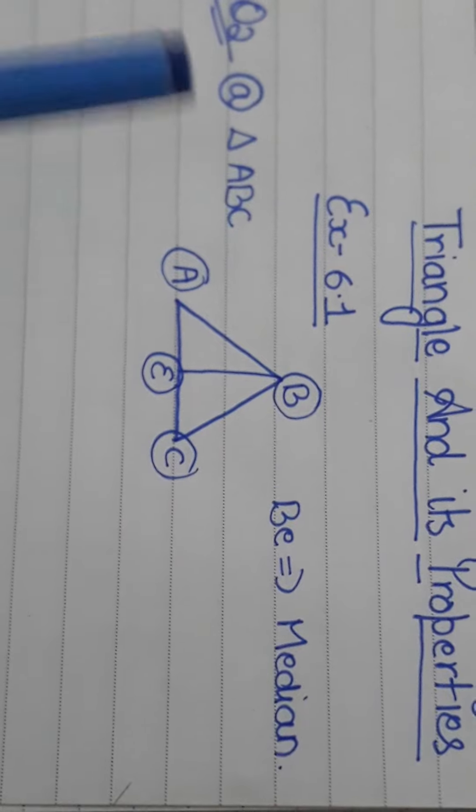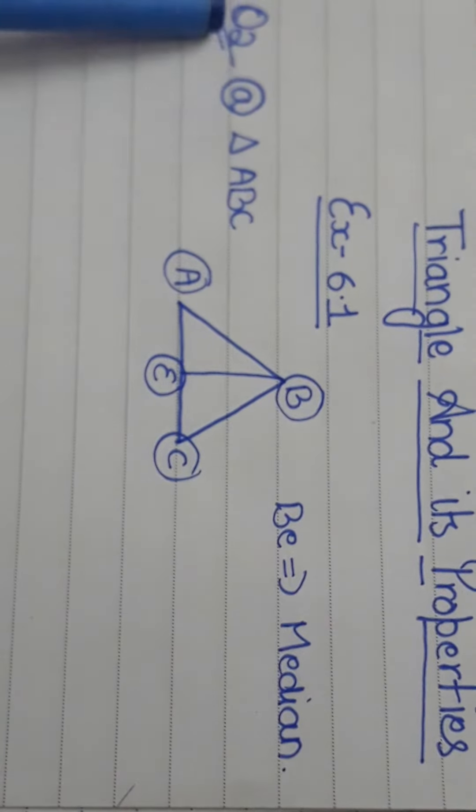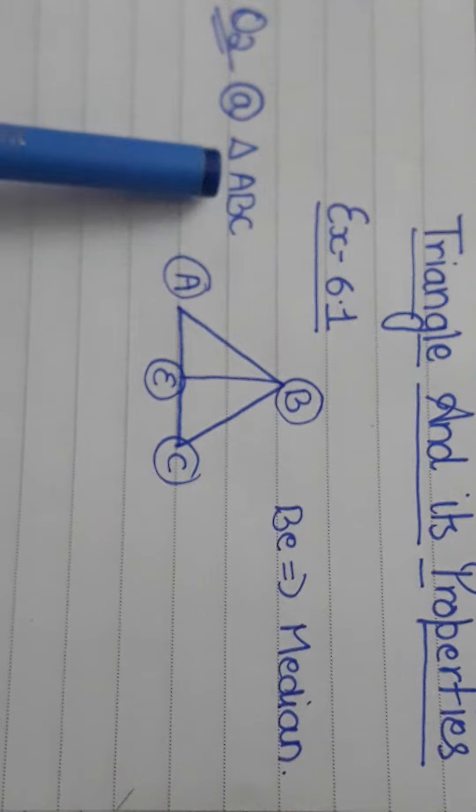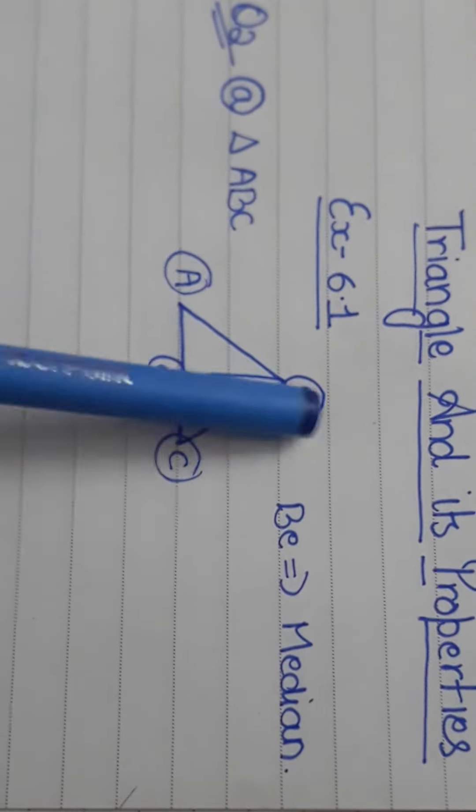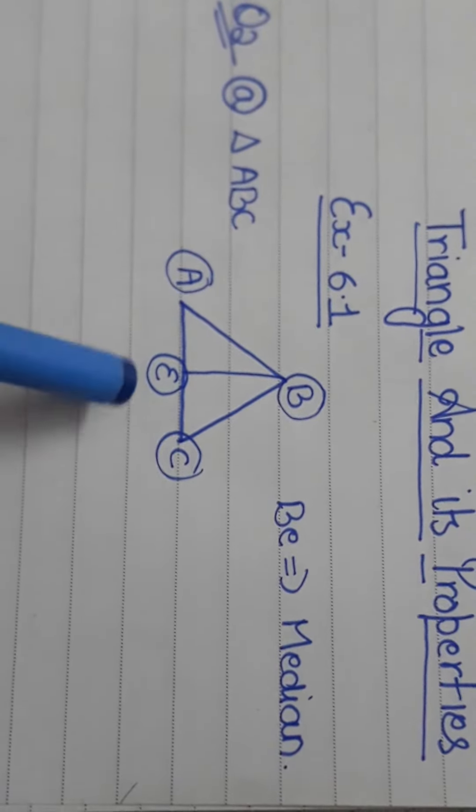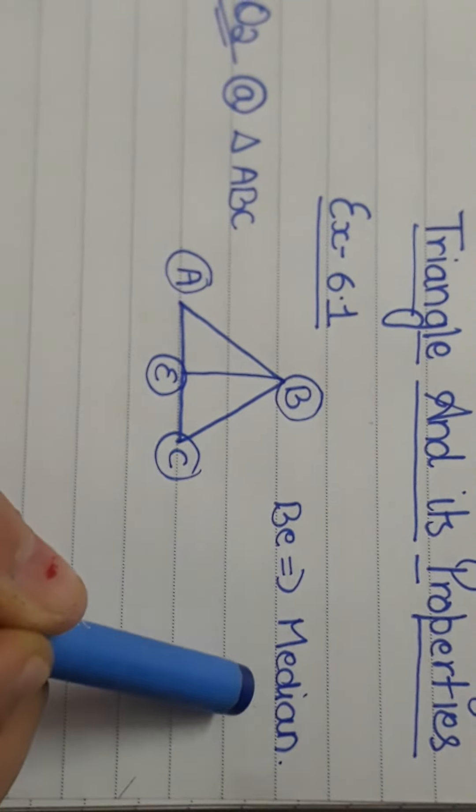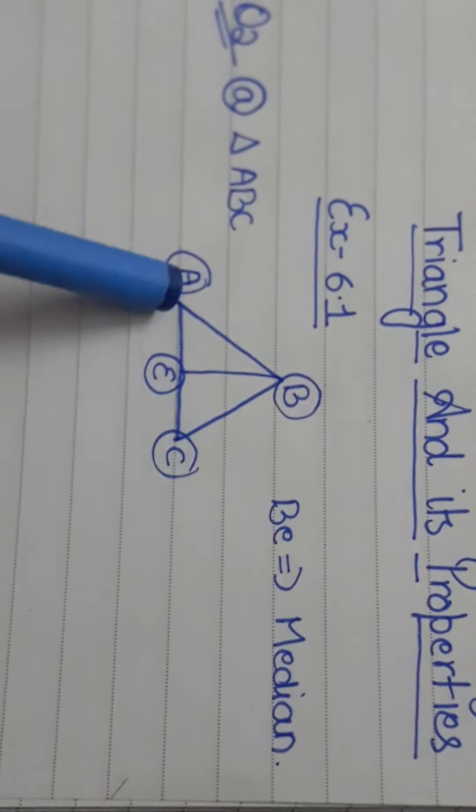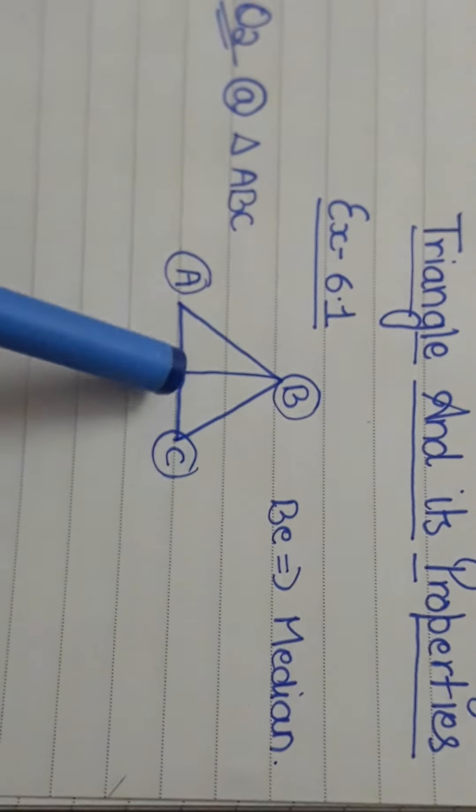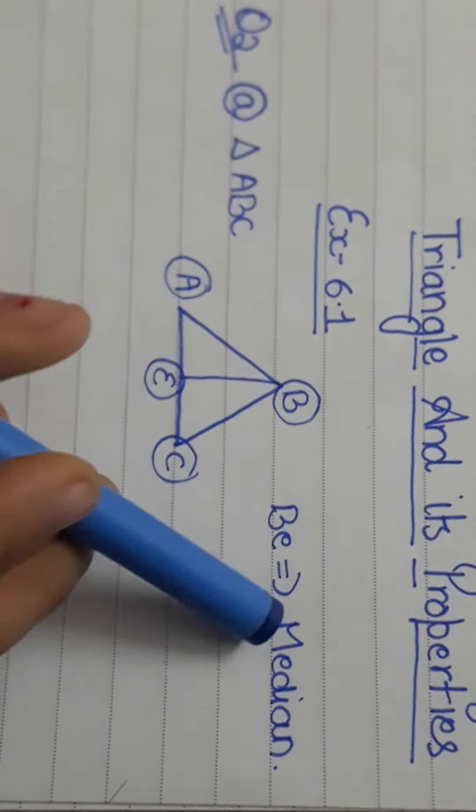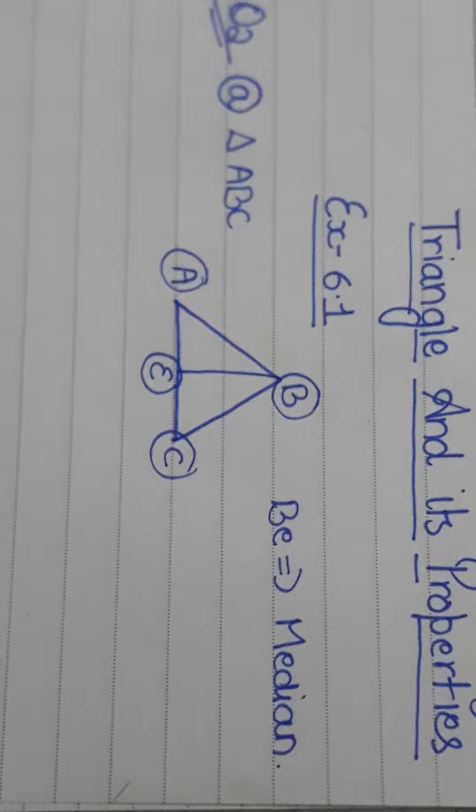So friends you can look at here triangles and its properties. Question number 2, part A. Triangle ABC, and E is the point where BE is the median of this triangle which lies in between A and C. The midpoint of A and C is the median. Let us go on to the next question.